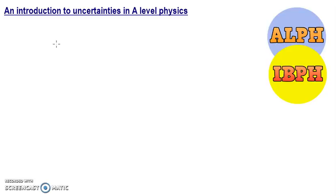Hi everybody. Video number two is an introduction to uncertainties in A-level physics. It works for the IB as well at this level for our introduction. Later on we'll do videos about more difficult uncertainties, hopefully some advanced uncertainties, including sines, cosines and logarithms.